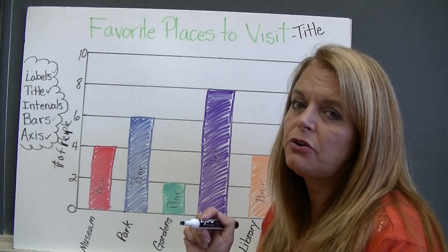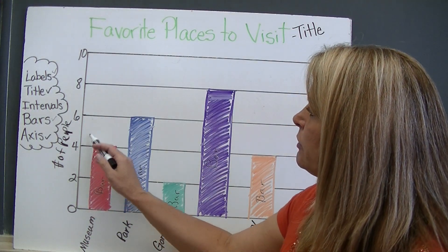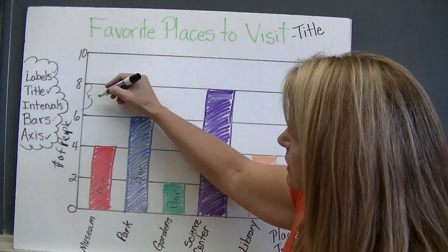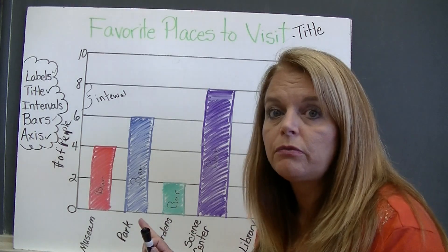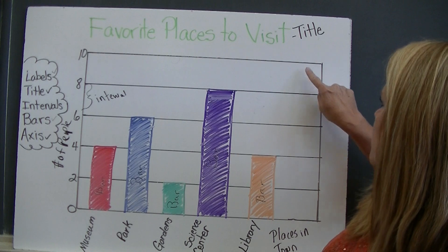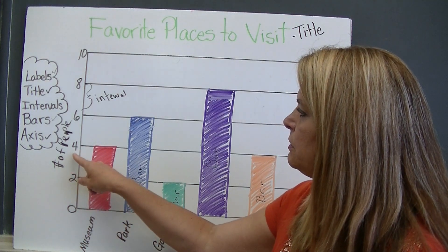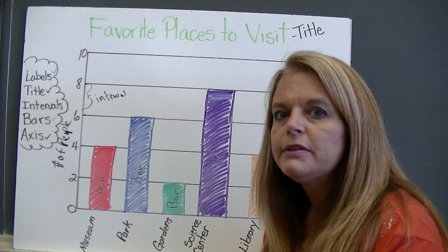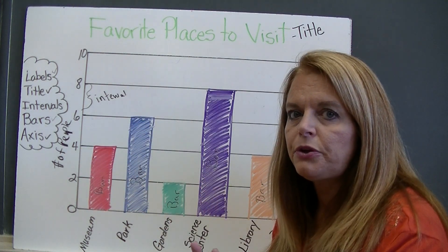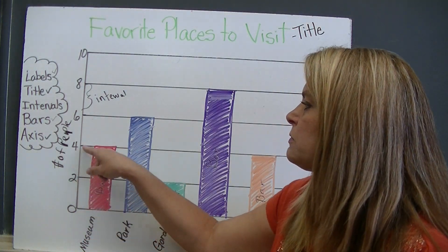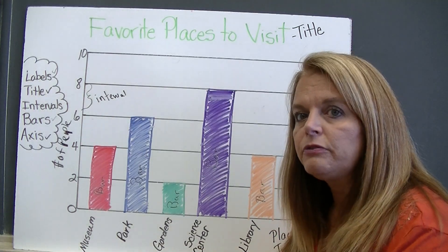And intervals — remember I told you that's hard to understand until you look at the graph. Well, here are my intervals. The space from here to here is an interval, from here to here is an interval. It's the space between each of the lines. It's very important that you look at these intervals before you start reading your graph. If I just counted, I might think one, two, three, four, five. But looking at the axis labeled "Number of People," I can see zero, two, four, six, eight, ten. So my intervals are by twos — each space represents two. Your intervals always have to be equal.